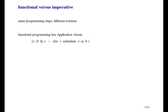Now I want to compare functional programming with imperative programming — it's really all the same steps but in a different notation. In functional programming we apply functions using the application axiom; in imperative programming we use the substitution law, but they're exactly the same — just substitute. In spite of the similarity there are two camps of programmers, each claiming that their way is somehow better than the other.